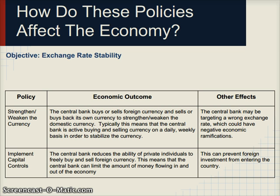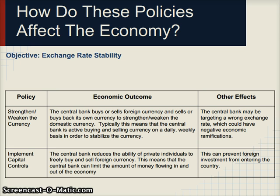A second exchange rate stability tool is implementing capital controls, where the central bank prevents private buyers and sellers from freely buying and selling the currency, limiting money flowing in and out of the economy. The downside is that this creates rigidities and can prevent foreign investment from entering, hindering long-term growth. More capital controls may provide short-term stability but are not good for long-term economic development.